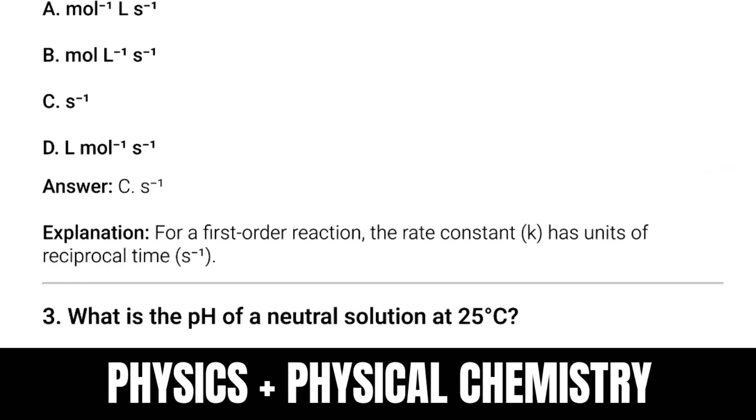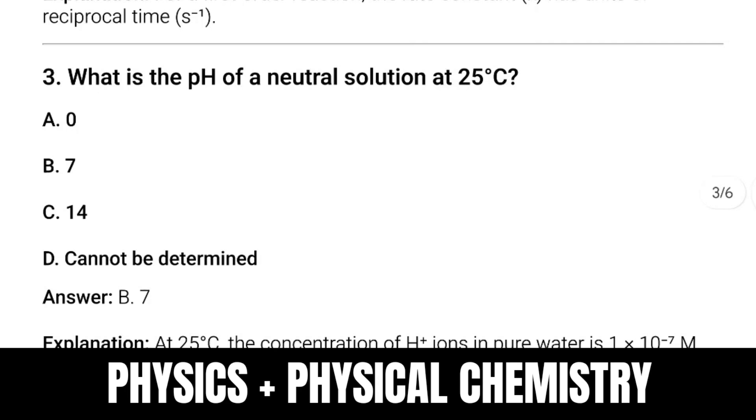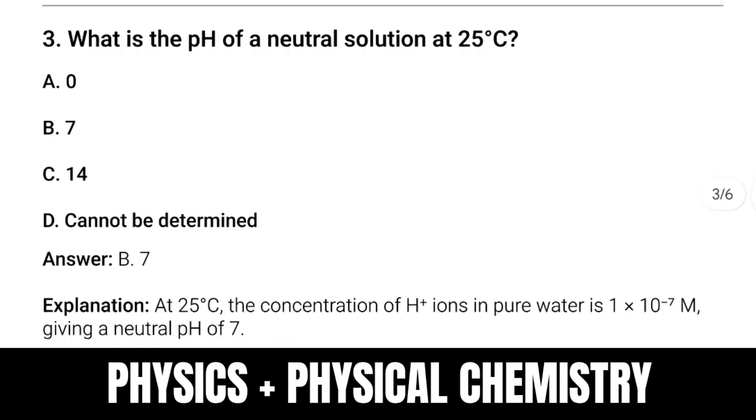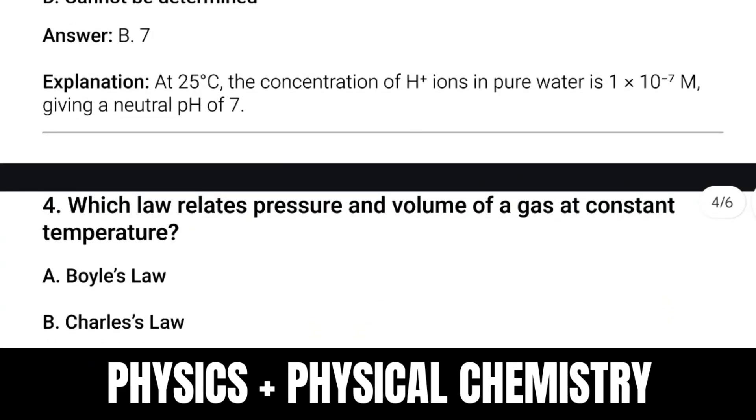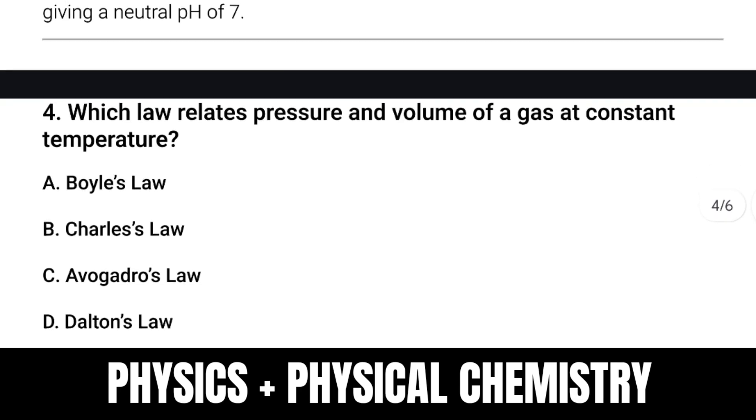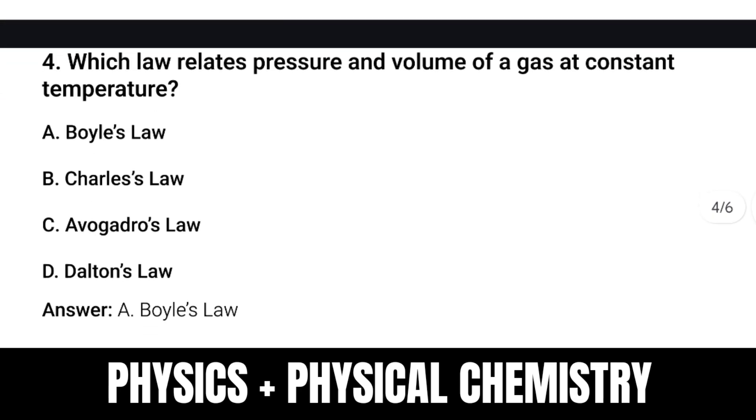Most important question: What is the pH of a neutral solution at 25°C? Answer is 7. Why? At 25°C, the concentration of H+ ions in pure water is 1 × 10^-7 molar, giving a neutral pH of 7.